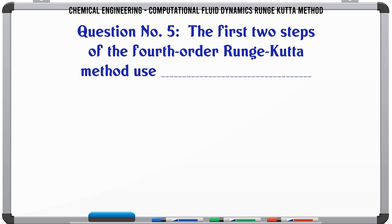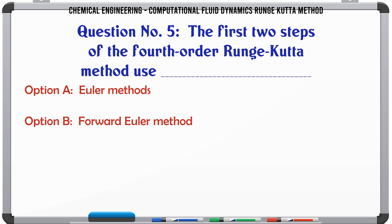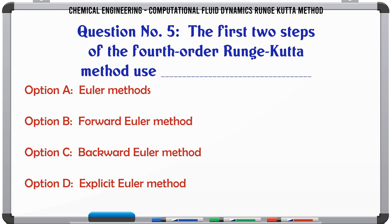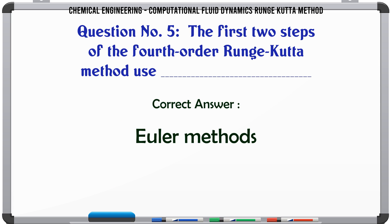The first two steps of the 4th order Runge-Kutta method use: A: Euler methods. B: forward Euler method. C: backward Euler method. D: explicit Euler method. The correct answer is: Euler methods.